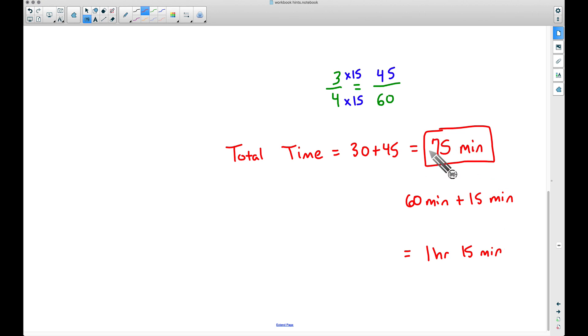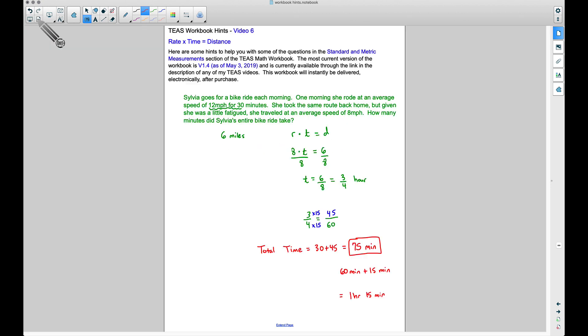But again, since the question did say how many minutes did her entire bike ride take, we will stick with that 75. And there you have it: TEAS workbook hints video number 6 dealing with rate, time, and distance. Some things to be mindful of here: units of time, we had hours and minutes. And then when we solved it here, we actually got an answer in terms of hours because remember we were talking about 8 miles per hour. But ultimately we had to convert that back to minutes as well to answer the question. If you have any questions, leave a comment below, and that's it for this video. I hope it helped.